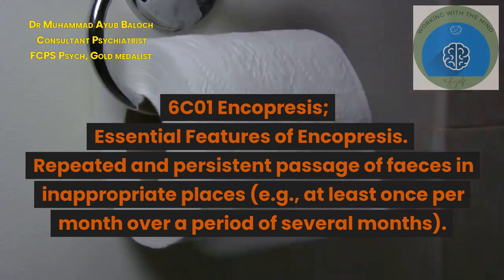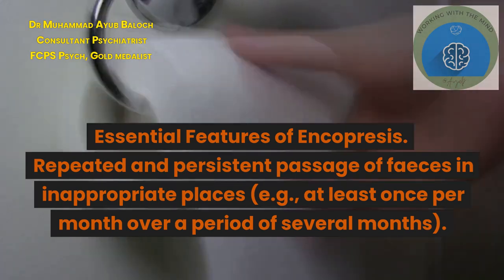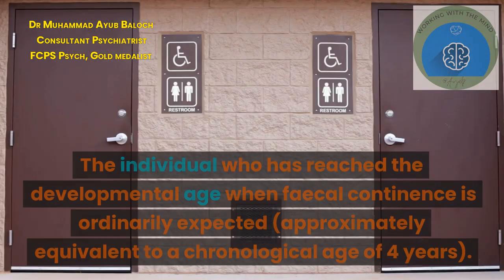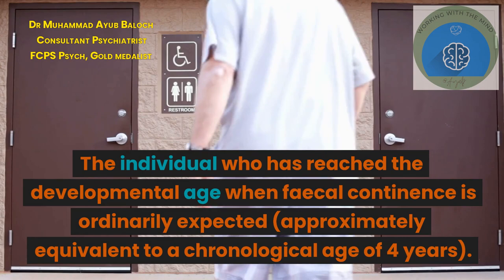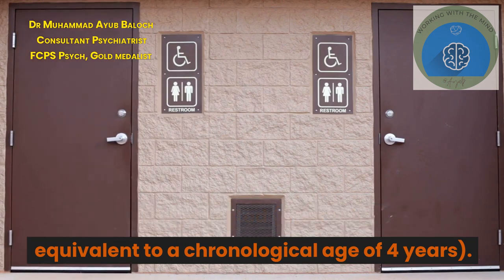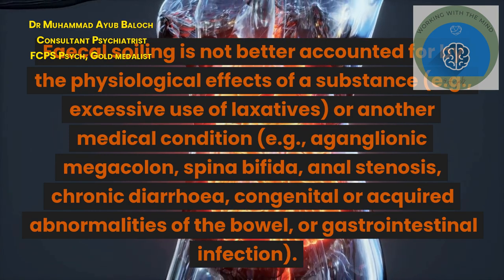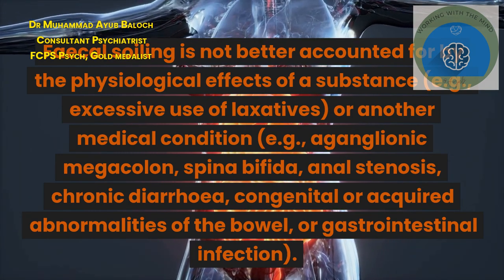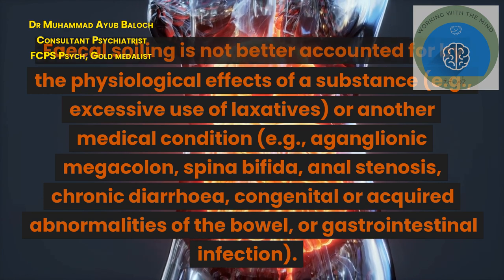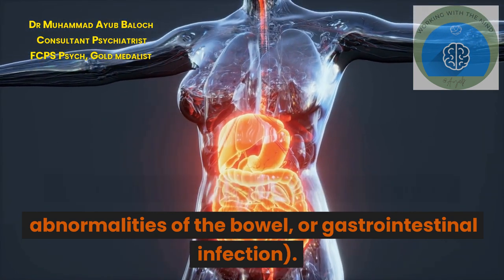6-C01 encopresis: essential features include repeated and persistent passage of feces in inappropriate places, for example at least once per month over a period of several months. The individual has reached the developmental age when fecal continence is ordinarily expected, approximately equivalent to a chronological age of 4 years. Fecal soiling is not better accounted for by the physiological effects of a substance such as excessive use of laxatives, or another medical condition such as aganglionic megacolon, spina bifida, anal stenosis, chronic diarrhea, congenital or acquired abnormalities of the bowel, or gastrointestinal infection.